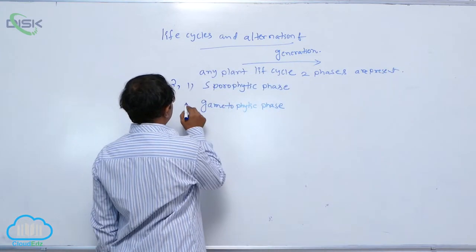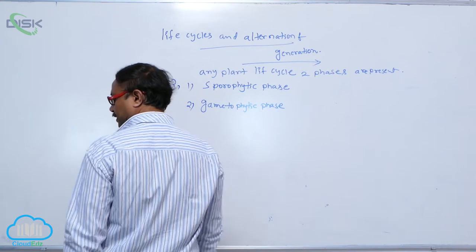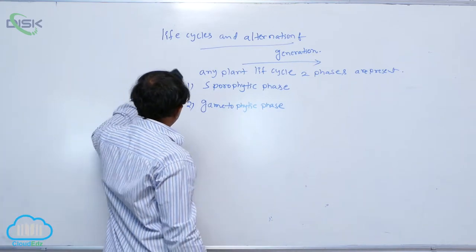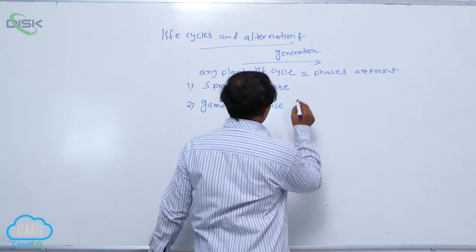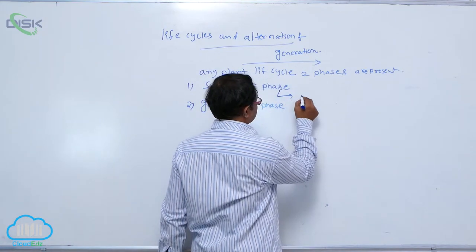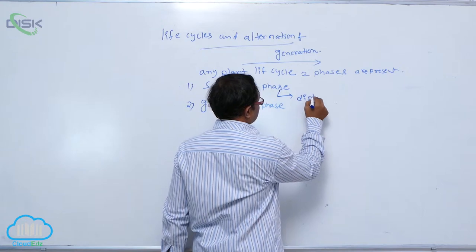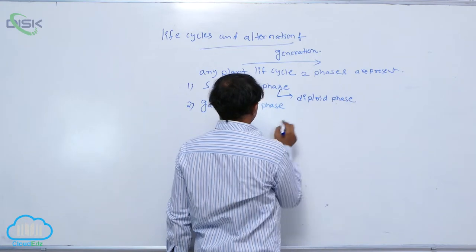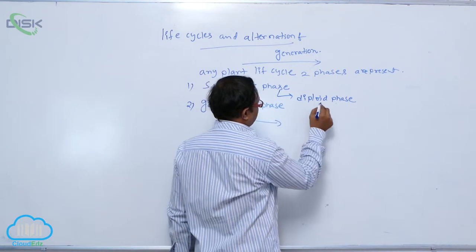Two phases are present. One is the sporophytic phase, second one is the gametophytic phase. So in that, this sporophytic phase is also known as the diploid phase. Gametophytic phase is known as a haploid phase.